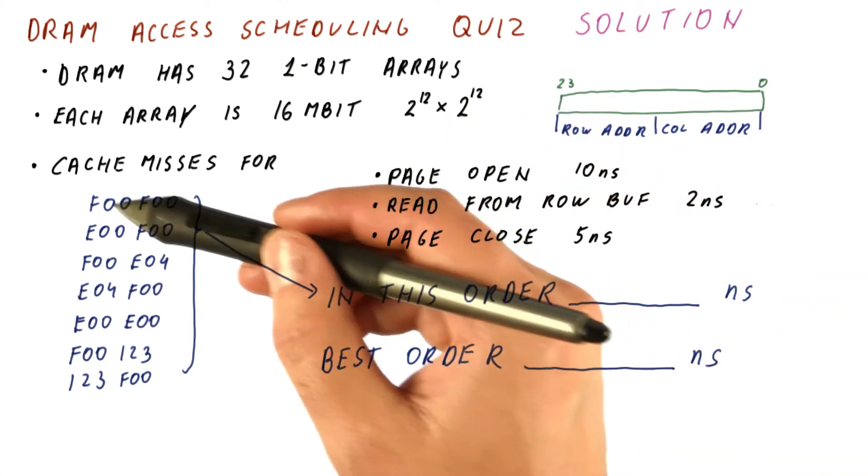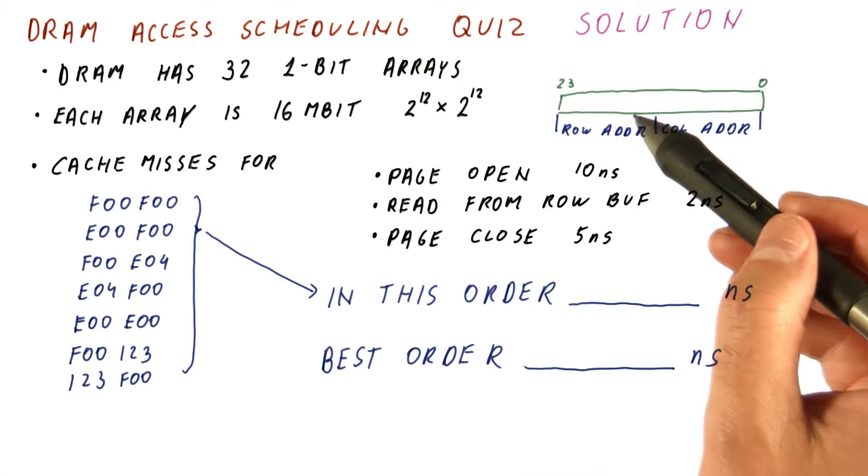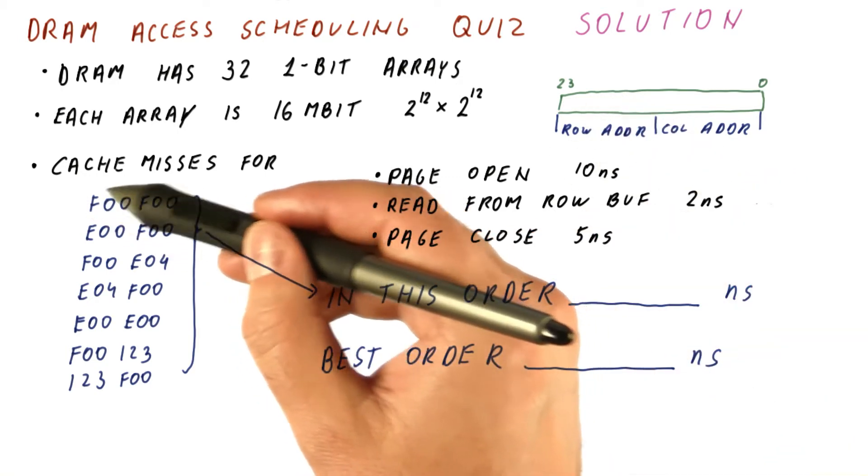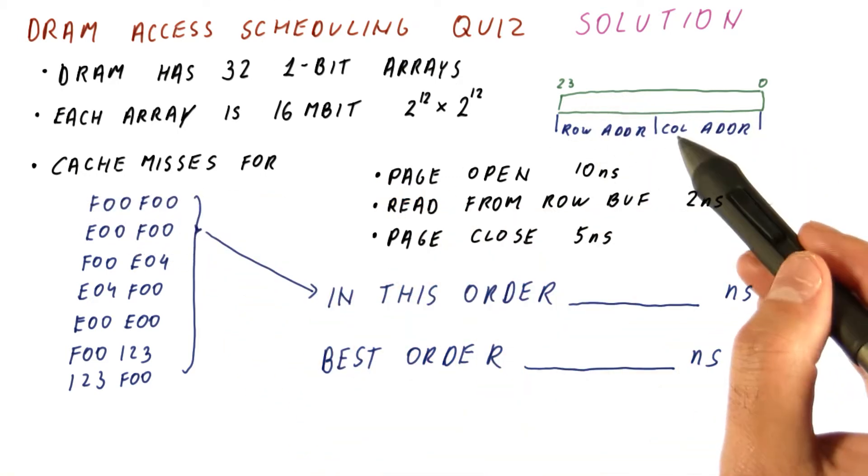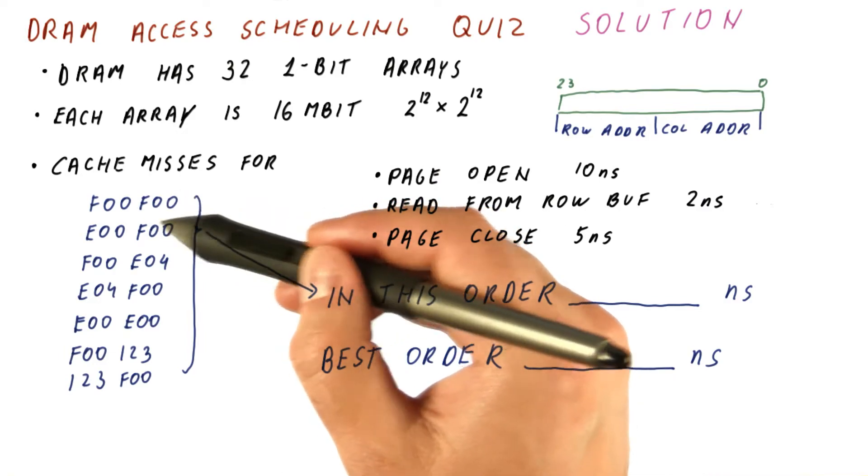12 bits is three hex digits. So the row address will be the upper three hex digits and the column address will be the lower hex digits.